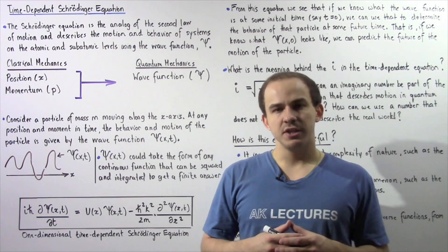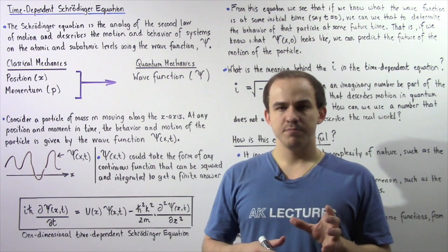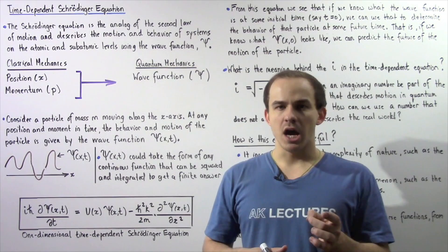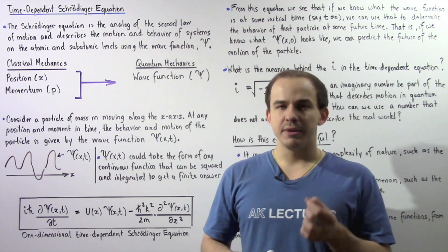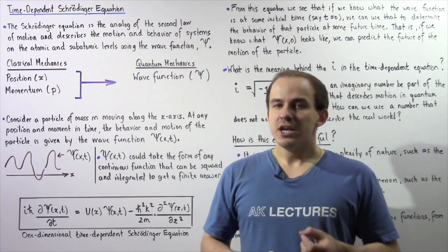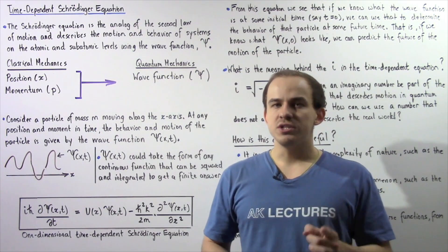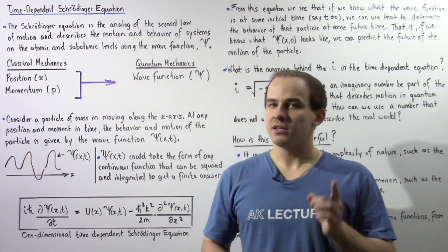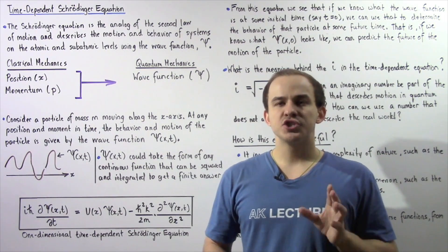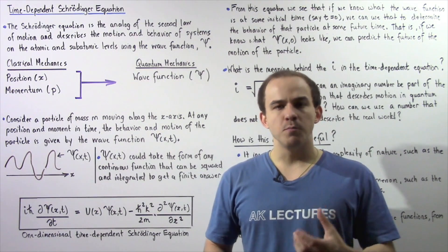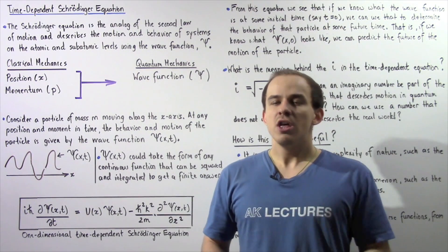As we discussed previously, the Schrödinger equation is basically the analog of the second law of motion in quantum mechanics. In the same exact way that we use the second law of motion in classical mechanics to describe the way that our object moves and behaves, in quantum mechanics,